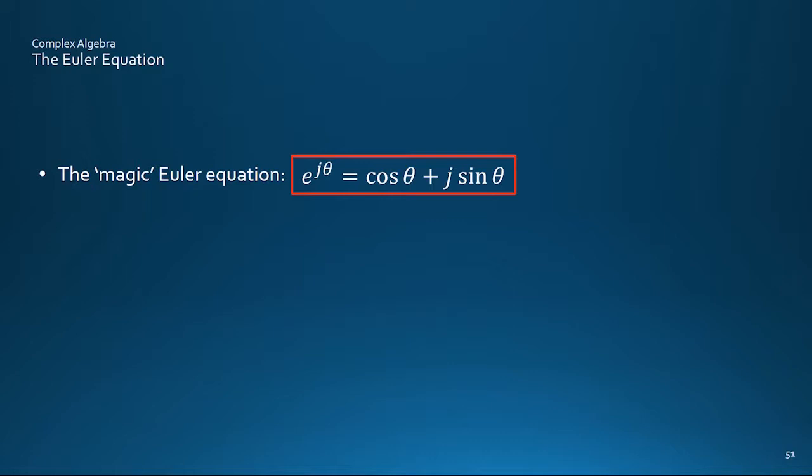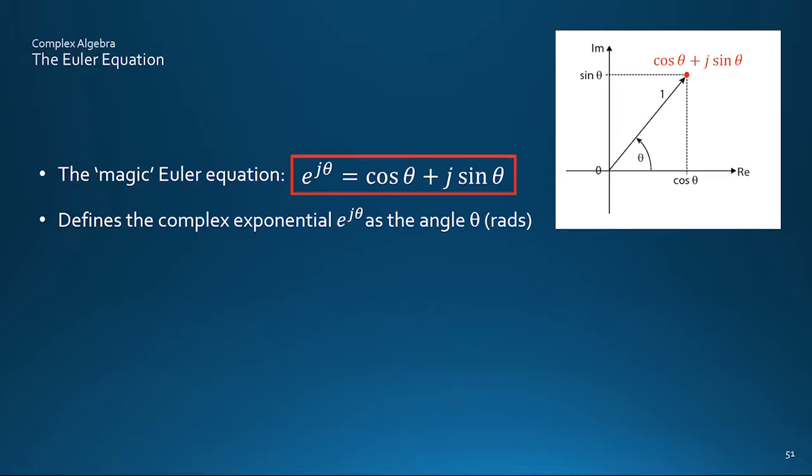Polar form is based on the famous Euler equation, as close to magic as most anything I know of, and which is a topic for Part 2. The gist for us here is that it defines e to the j theta, an exponential raised to an imaginary power theta, as simply the angle theta in radians. As the real axis distance of 1 times cos theta and the imaginary distance of 1 times sin theta, add up to the point at the end of a vector of unit length and phase angle theta.